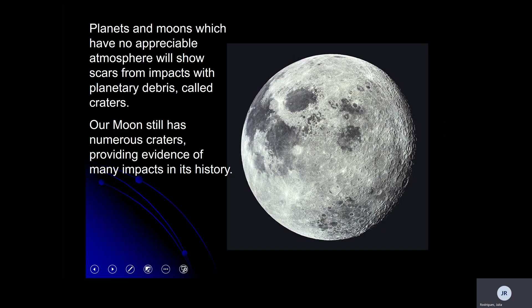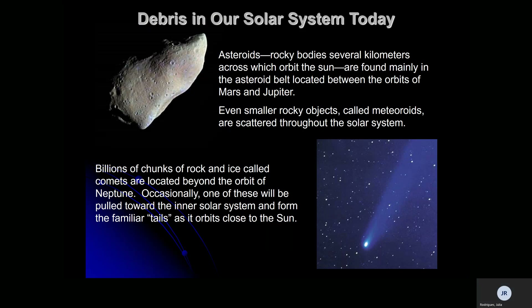Planets and moons with no appreciable atmosphere will show scars from impact with planetary debris. Our moons will have craters from different impacts throughout history. Some of the debris in our solar system includes asteroids — rocky bodies several kilometers across, mainly found in the asteroid belt located between Mars and Jupiter. Even smaller rocks are called meteorites, and they're scattered throughout our solar system, unlike asteroids which are mainly found in that asteroid belt.